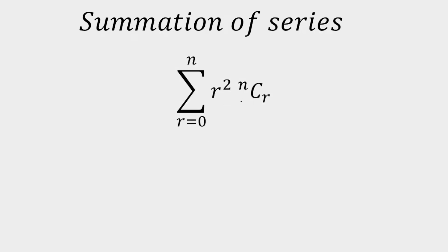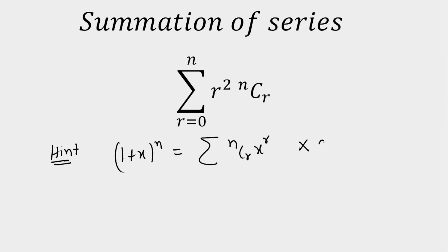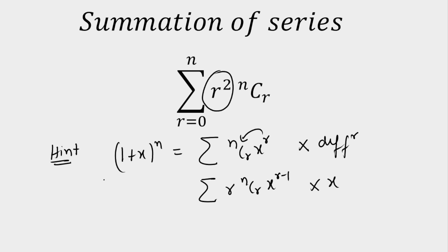This is the final variation in Type 1. Try to solve the problem involving summation of r²·nCr. The hint: differentiate (1+x)^n to get r·nCr·x^(r-1); then multiply by x to get r·nCr·x^r; differentiate again to get r²·nCr·x^(r-1). Finally put x = 1 to get your answer.